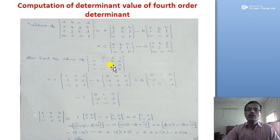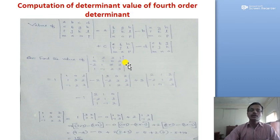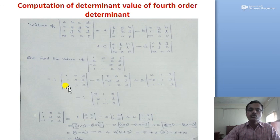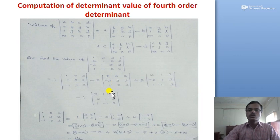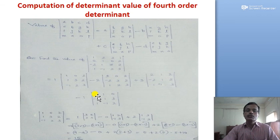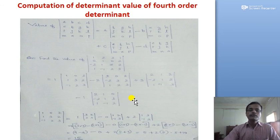Let us work through a 4th order determinant example with the matrix [2, 1, 0, 2; −2, 1, 3, 2; 1, −1, 2, 3; ...]. Expanding along the first row: 2 multiplied by the 3×3 determinant of [1, 0, 2; 3, 2, −1; 2, 3, ...], minus 2 multiplied by the determinant of [2, 0, 2; −2, 3, 2; 1, 2, 3], plus 3 multiplied by the determinant of [2, 1, 2; −2, 1, 2; 1, −1, 3], minus 1 multiplied by the determinant of [2, 1, 0; −2, 1, 3; 1, −1, 2].